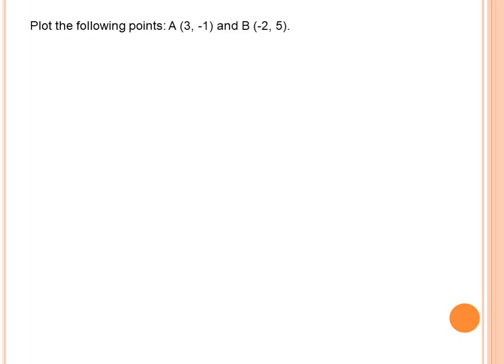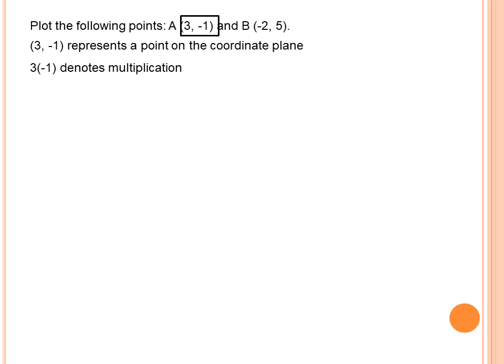Let us try to plot the following points. Points in the Cartesian plane are named with capital letters such as A to Z — any letter will do. We are plotting point A at (3, negative 1). Please take note of the use of parentheses, because this is the correct way to represent a point on the coordinate plane — it is different from 3 times negative 1, which denotes multiplication.